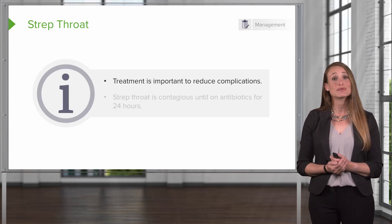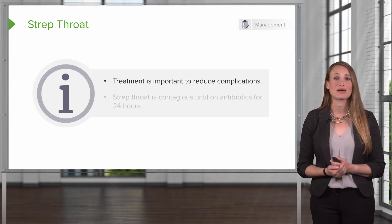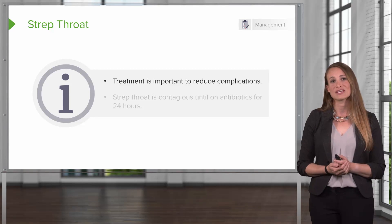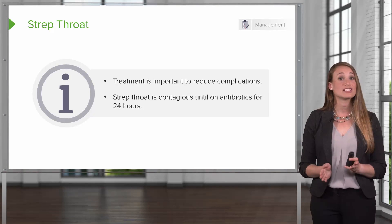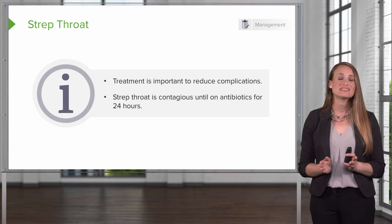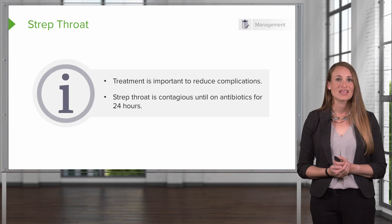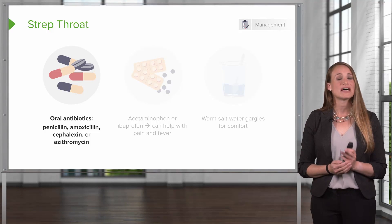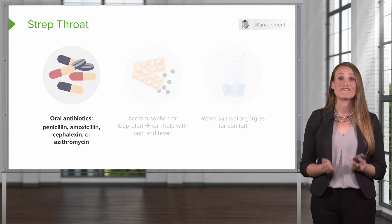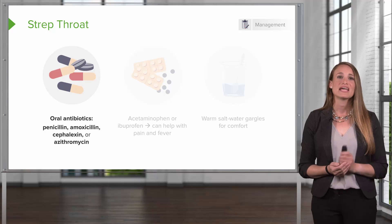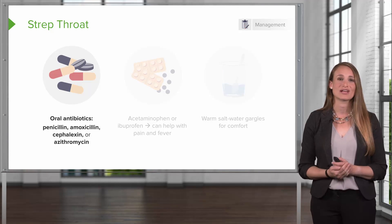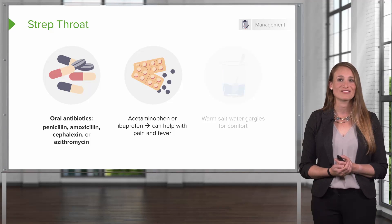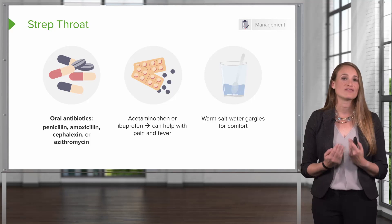Strep throat typically resolves in three to seven days with or without antibiotics. However, without treatment, the patient can remain contagious for two to three weeks and faces higher risk of complications such as rheumatic fever. Patients are contagious until they have been on antibiotics for 24 hours, so they should stay out of school, work, and community activities. Treatment is typically 10 days of antibiotics — penicillin or amoxicillin are commonly recommended as they are effective, have few adverse effects, and are affordable. Patients should complete the full course and not save extra antibiotics. Acetaminophen or ibuprofen can manage pain and fever, and warm saltwater gargles are also a great option for throat pain.